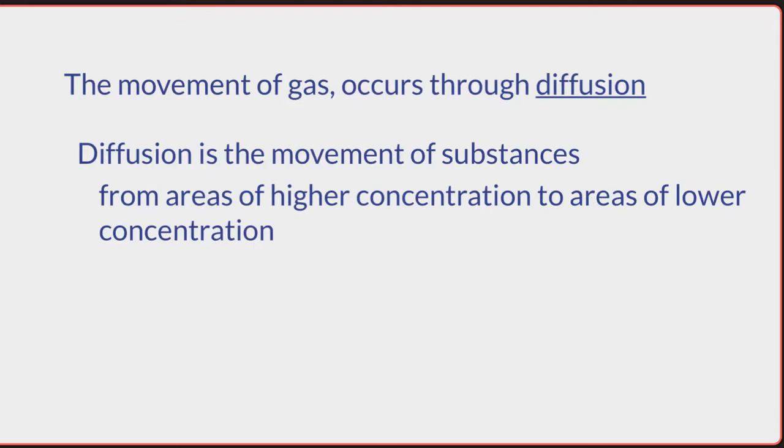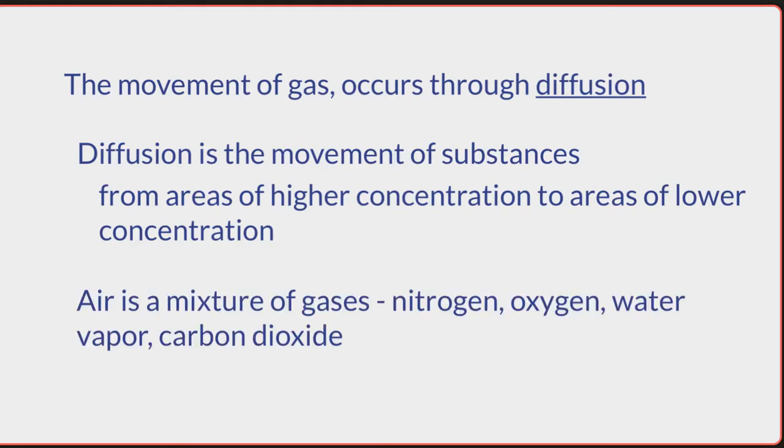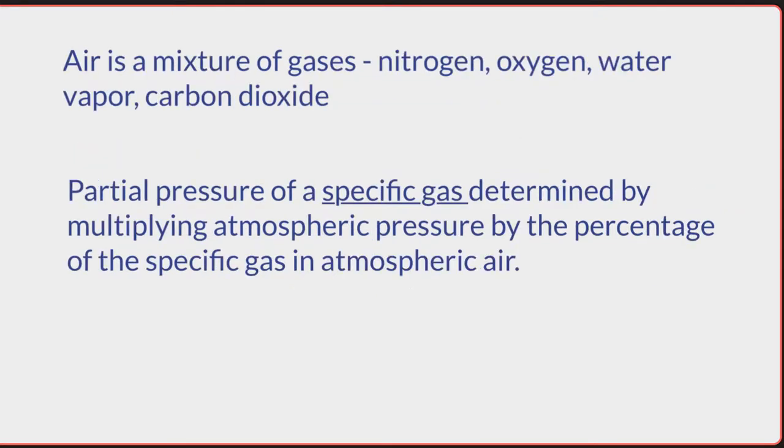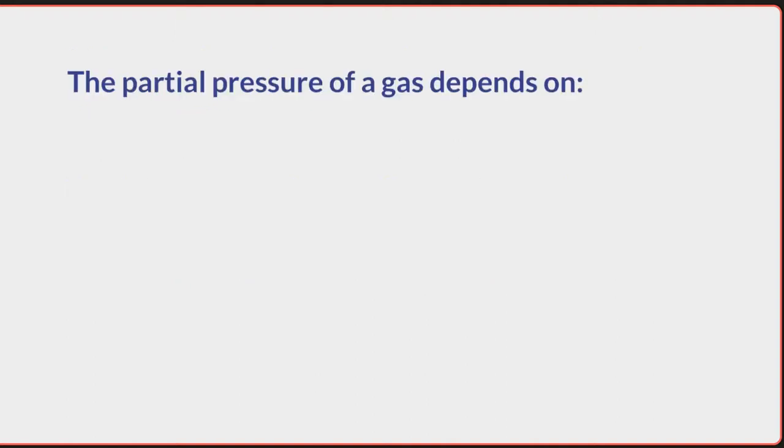Because air is a mixture of gases, including nitrogen, oxygen, water vapor, and carbon dioxide, we refer to the partial pressure of a specific gas. This is determined by multiplying the atmospheric pressure by the percentage of the specific gas in the atmospheric air. The partial pressure of the gas is going to depend on two elements: one, its concentration in the mix of air; the greater the concentration of the gas, the greater its partial pressure will be.